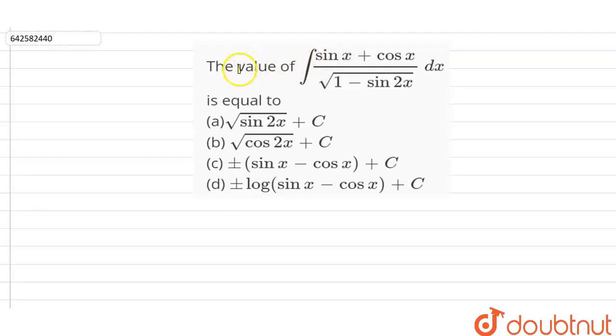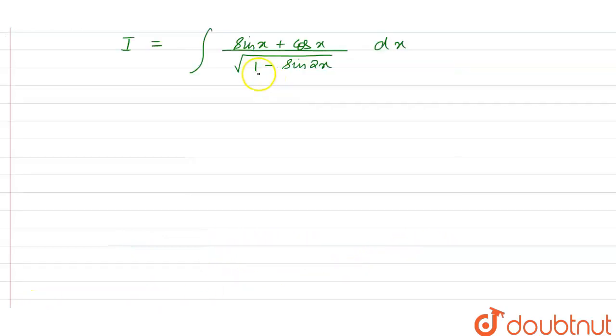So we have to find the value of this given integral. The integral given to us, let this integral be I, so we have I as sine x plus cos x in the denominator we have under root of 1 minus sine 2x with respect to dx.